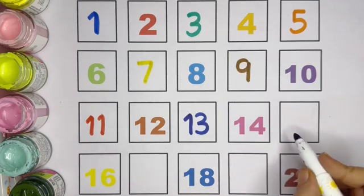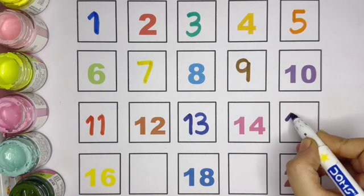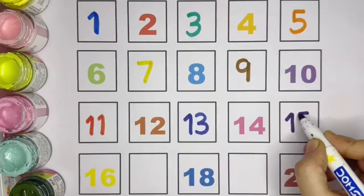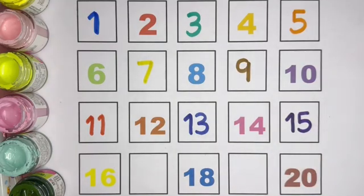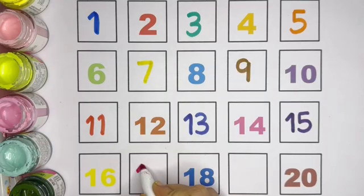13, 14. Missing number is 15. 1, 5, 15. 15, 16. After 16, 17. 1, 7, 17.